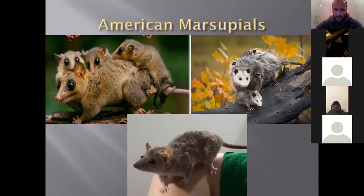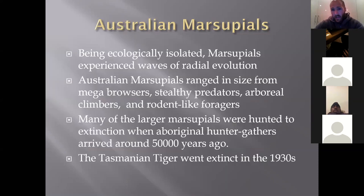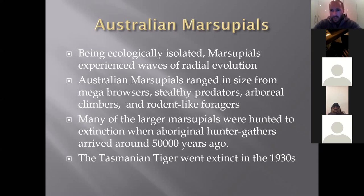American possums are cute, look like rodents and have a pouch. They are fairly intelligent, do not carry rabies as the rumour goes, and are very important for controlling tick infestations and insects — when culled, insect populations have exploded. Australian marsupials are very interesting — ecologically isolated, so they experienced massive radial evolution. There are no native placentals to Australia beyond bats and some rodents that drifted across on logs millions of years ago — no cows, dogs or cats. All introduced placental species have caused huge competition with the marsupials. Marsupials range in size from mega browsers to stealthy predators, arboreal climbers and rodent-like foragers.